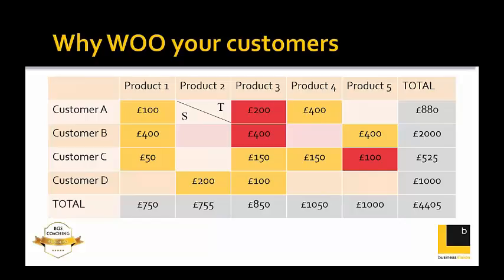Once you've told them, put a T in the box — that's the first stage. The second stage is to convert that telling into a sale, putting an S in the box, and then move on to another blank cell for a different customer or product. Your job — and your salesperson's job — is to fill all those blanks with a T and then an S. Let's quickly look at how to do the S: the selling.